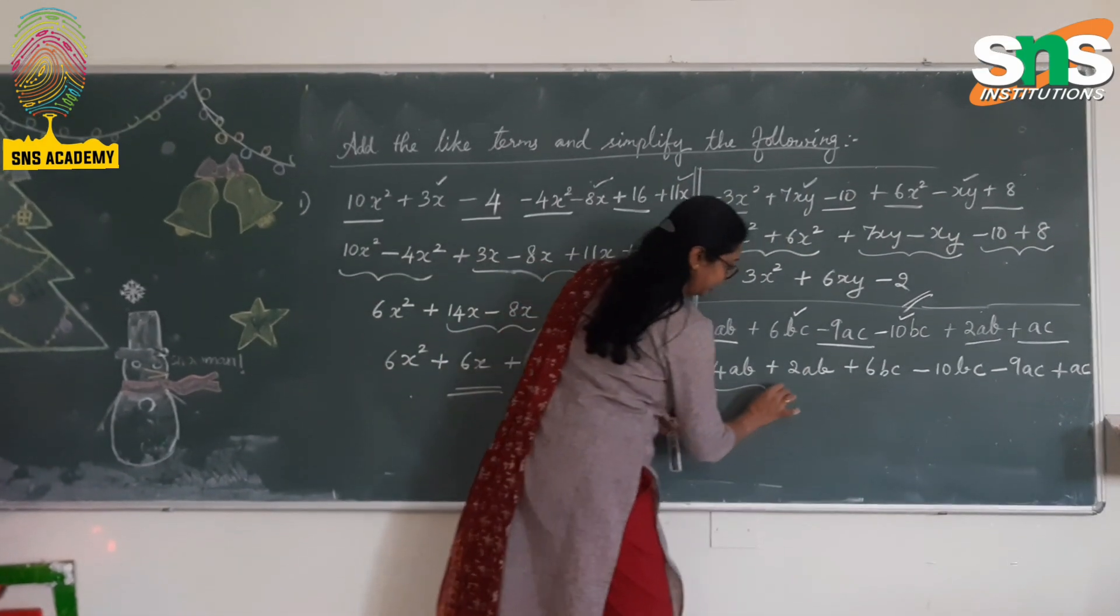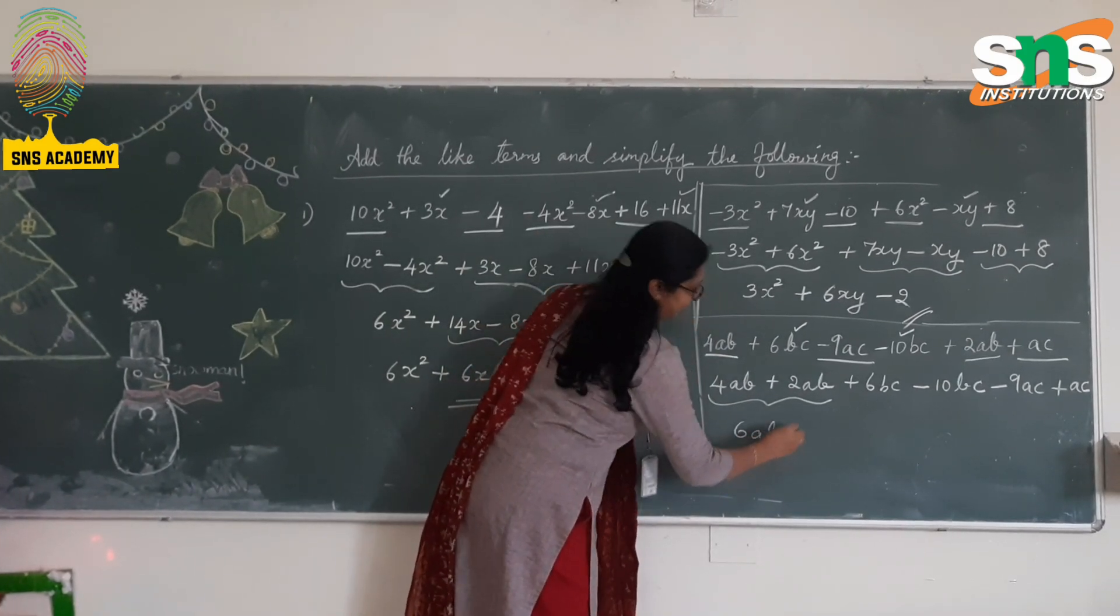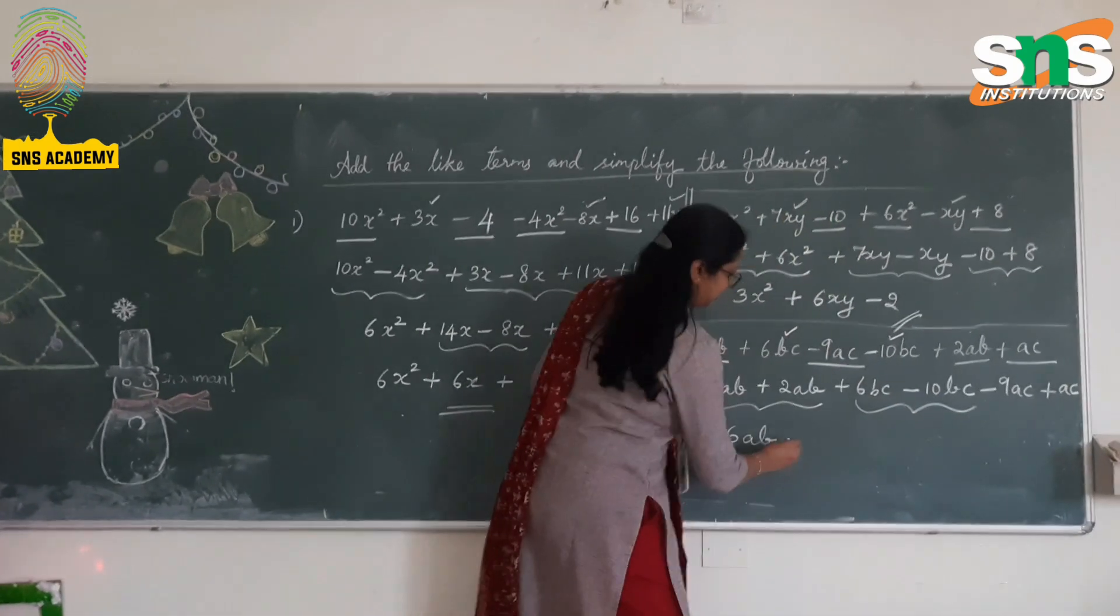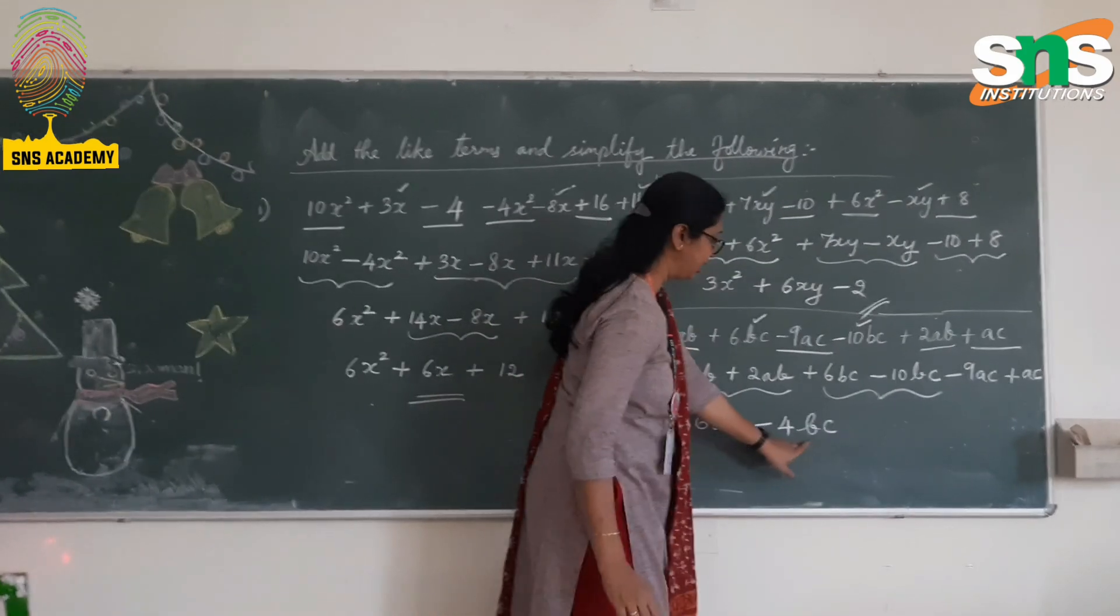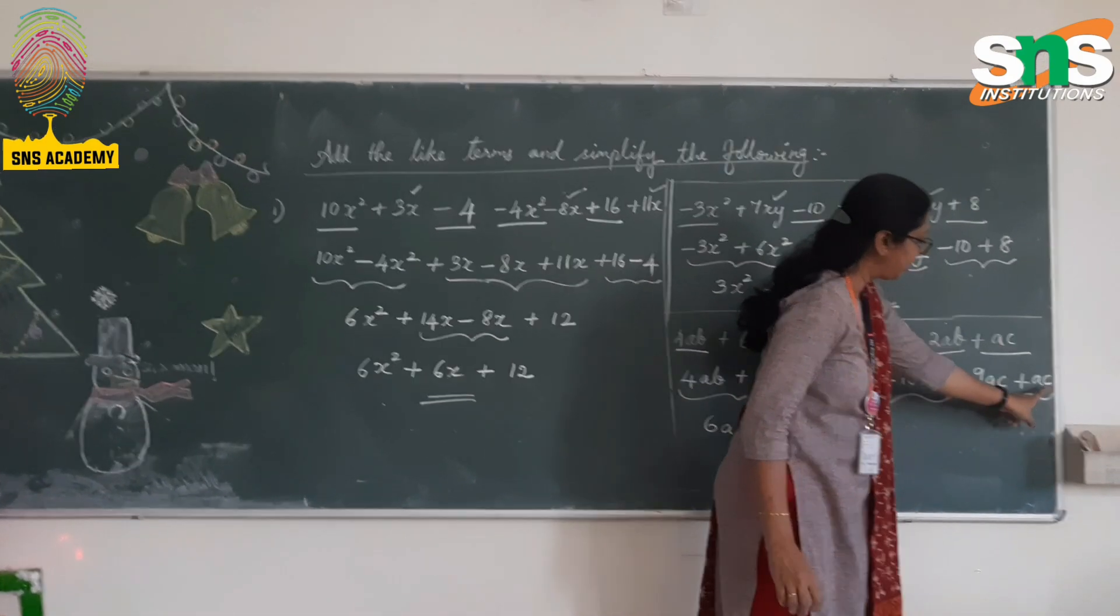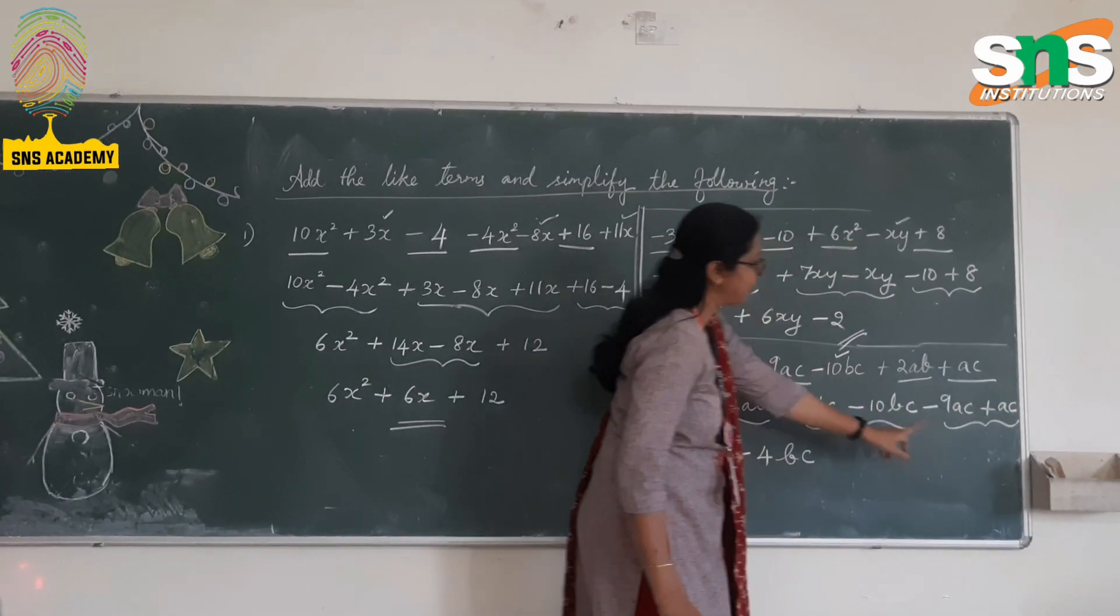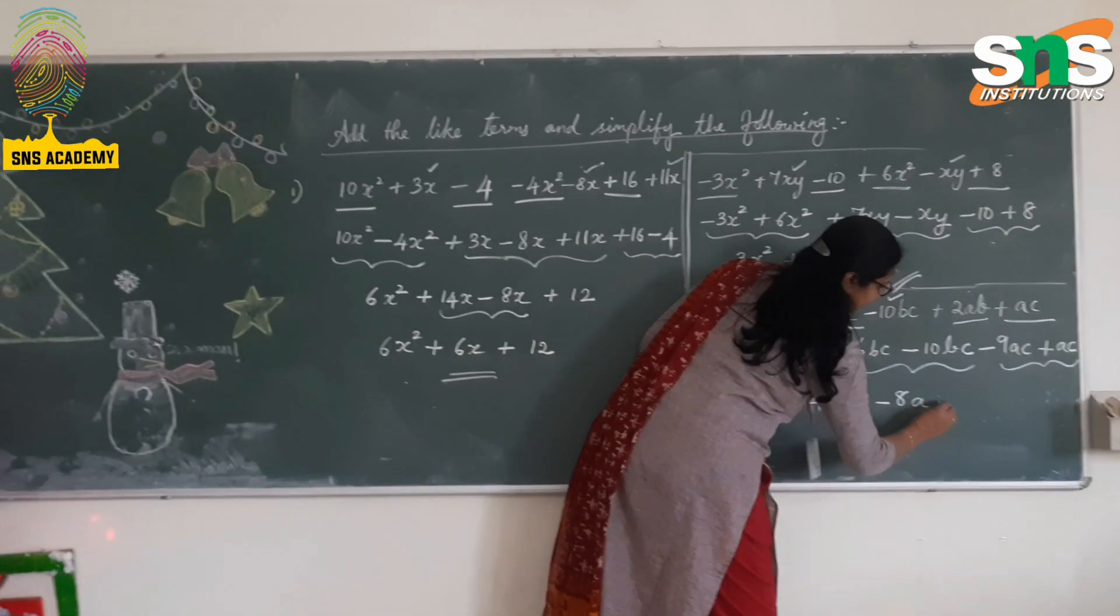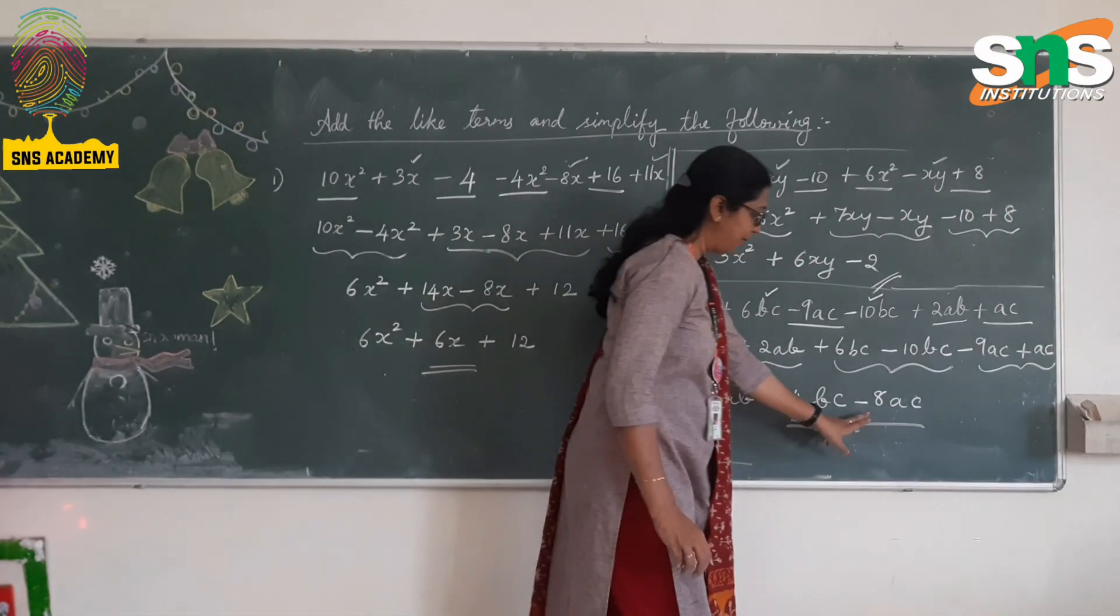Now we have to simplify. 4 + 2 is 6, 6ab. Then bc comes, 6 - 10 is negative 4. Different side subtract into the greater number side. And the variable is bc, so -4bc. Finally, as I said before, when you are not having any coefficient for this ac, the coefficient is going to be 1. So the sign is positive, positive 1. So -9 + 1 is -8, subtract into the greater number side, -8ac. So the answer is 6ab - 4bc - 8ac.